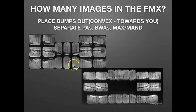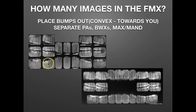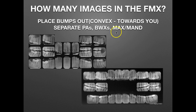Take all of your films — after processing, they all come out in a little pile. You have this pile of film in your hand, you go to a view box, and you place all the bumps out or towards you so the bump is convex. Then you want to separate the periapicals — the PAs for the posteriors and the anteriors — and separate them from the bite wings, so you have those in a separate pile or stack of film.